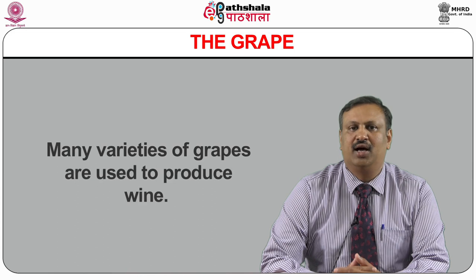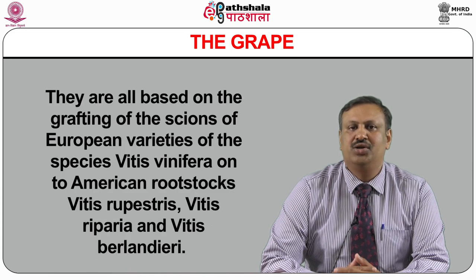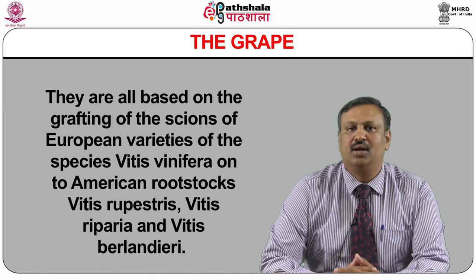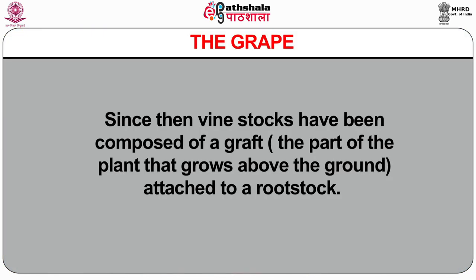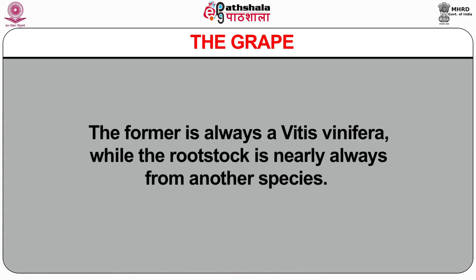All wine grapes are based on the grafting of the scions of European varieties of the species Vitis vinifera onto American rootstocks — Vitis rupestris, Vitis riparia and Vitis berlandieri. This became necessary in the 19th century because the louse phylloxera attacked the European rootstocks. As the American rootstocks are resistant to phylloxera, European growers found the solution by grafting Vitis vinifera onto the roots of wild American vines. Since then, wine stocks have been composed of a graft — the part that grows above the ground — attached to a rootstock. The former is always a Vitis vinifera while the rootstock is nearly always from another species.